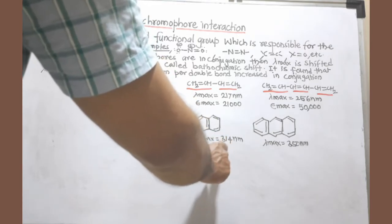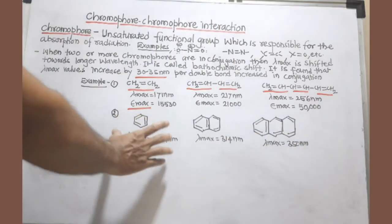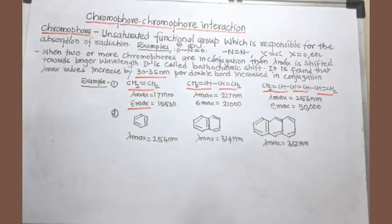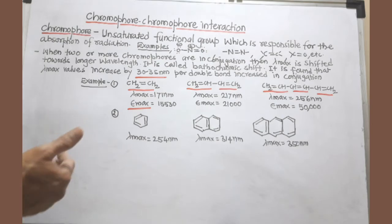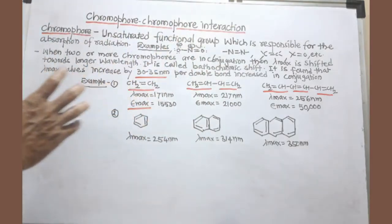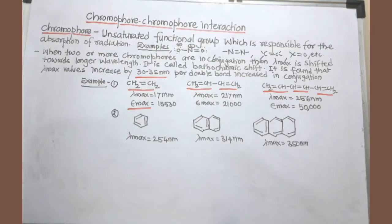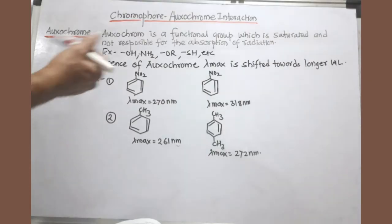In naphthalene, lambda max is 314 nanometers. In anthracene, more double bonds are in conjugation, so greater the conjugation, absorption is shifted toward the red end — toward longer wavelength — at 380 nanometers. Along with lambda max, the E max value is also increased, meaning intensity is also increased. This is the effect of chromophore-chromophore interaction: the lambda max, where maximum absorption is observed, is shifted toward the red end toward lower energy transition — this is called the bathochromic shift.